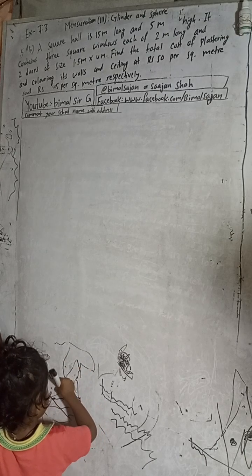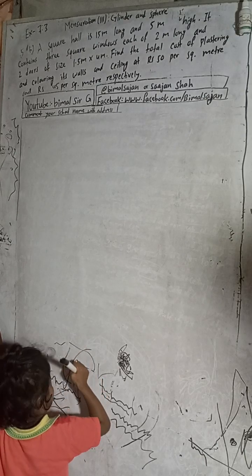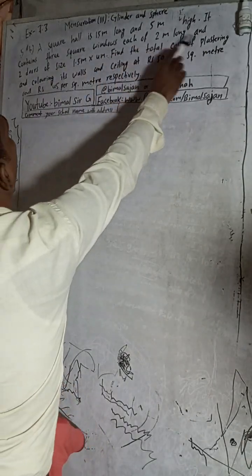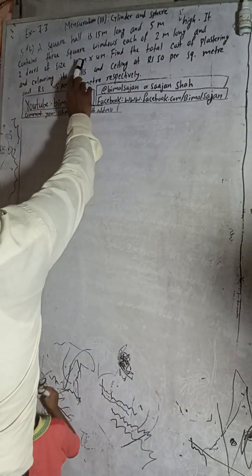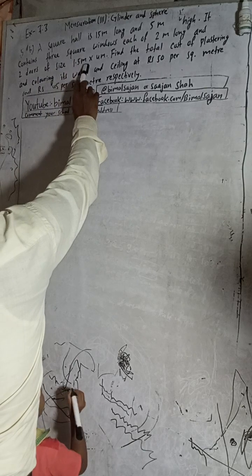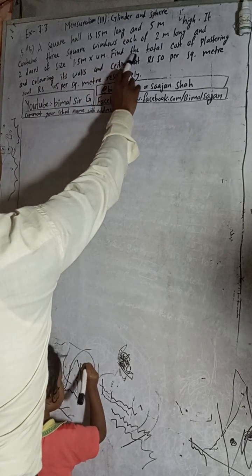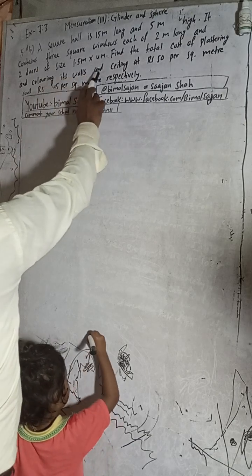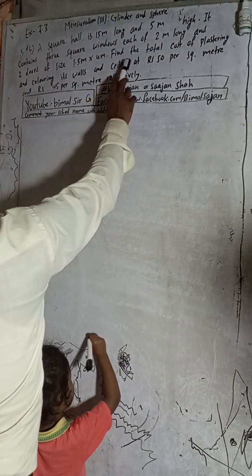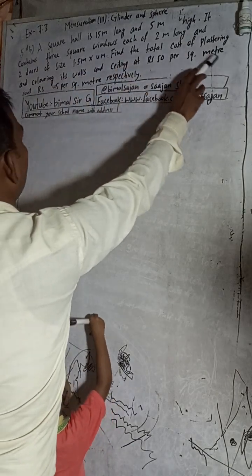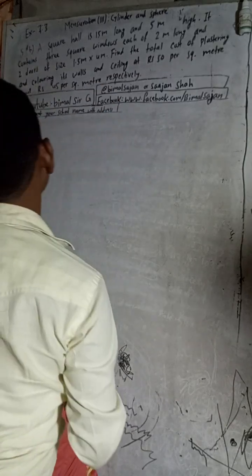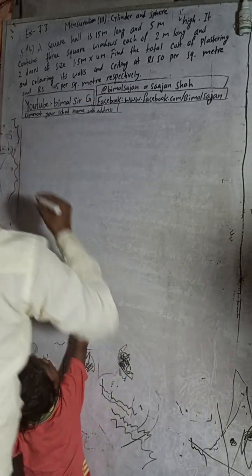A square hall is 15 meters long and 5 meters high. It contains three square windows each of 2 meters long and two doors of size 1.5 meters by 4 meters. Find the total cost of plastering and coloring its walls and ceiling at Rs 54 per square meter and Rs 45 per square meter respectively.